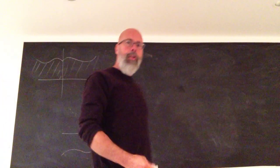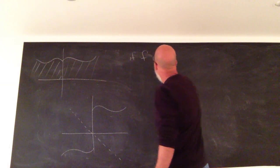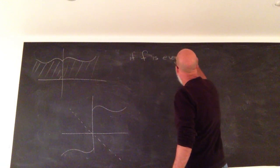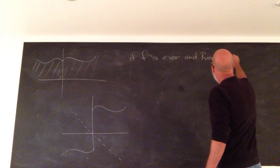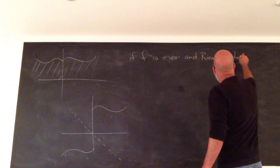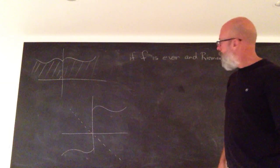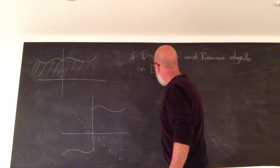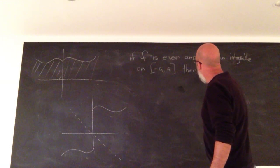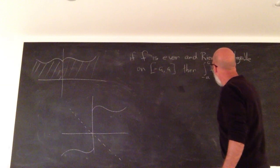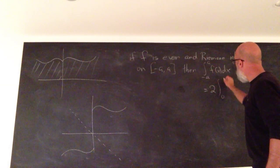So if your function is Riemann integrable, it is even and Riemann integrable on the interval negative A to A, then the integral from negative A to A is twice the integral from 0 to A.